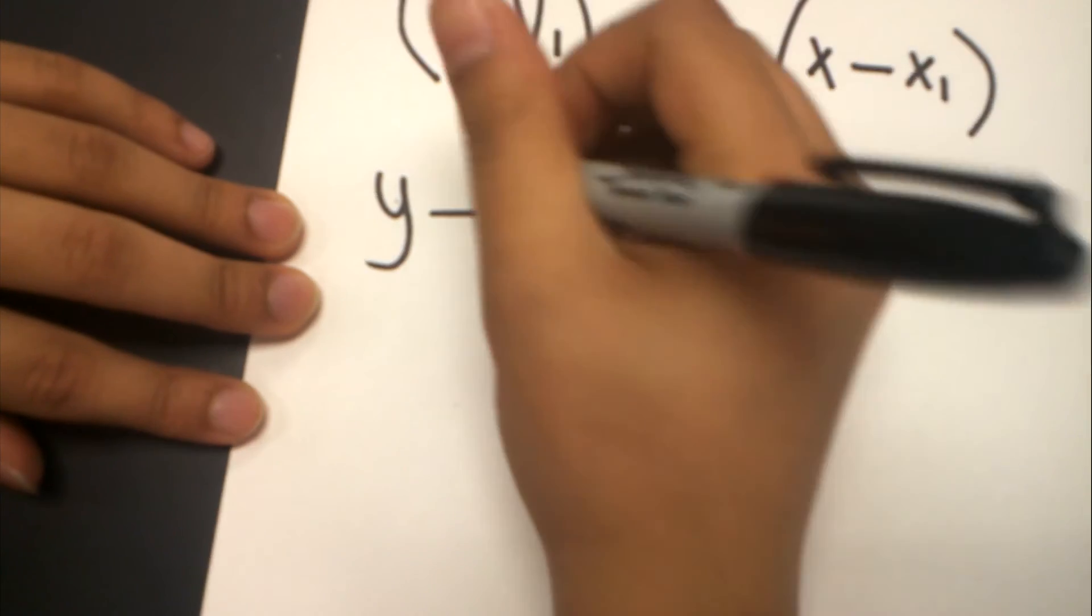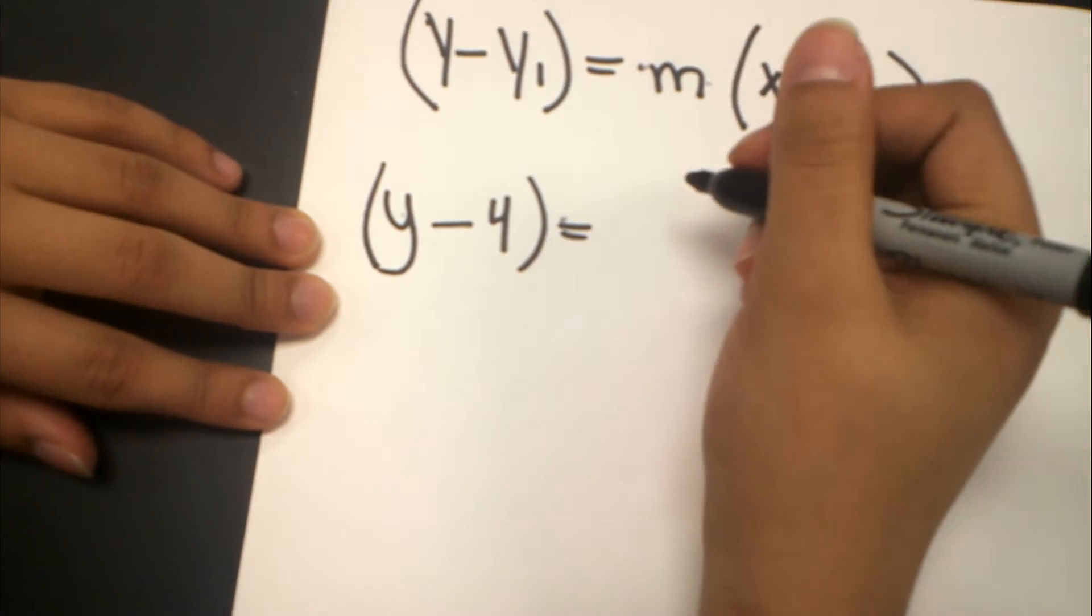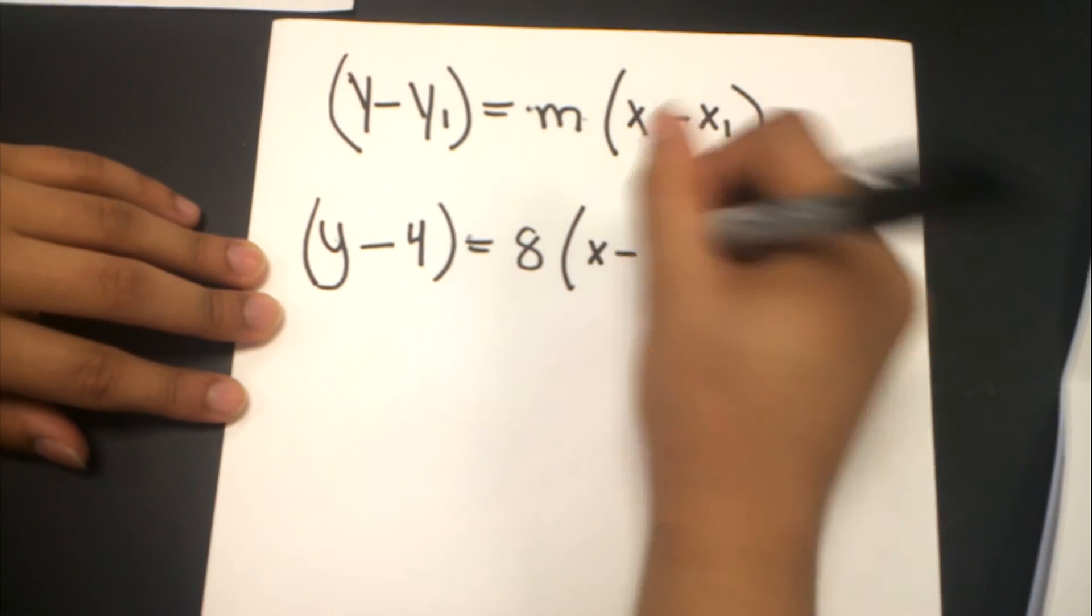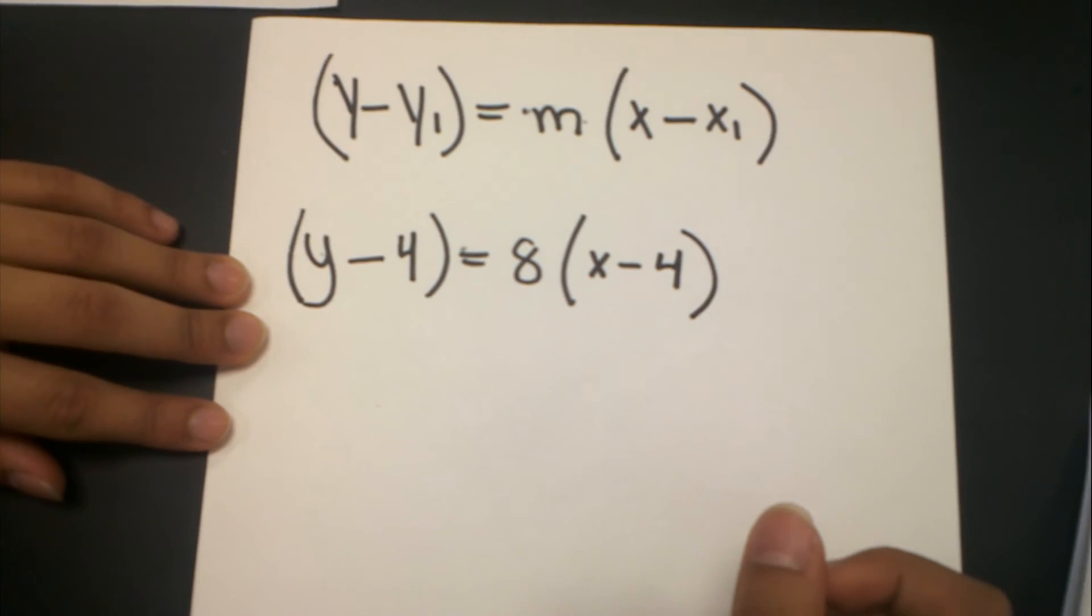So I am going to plug in for these variables right here. Y minus Y1, which is 4, equals M. M is the slope, which is 8, times X minus X1, which is 4 again. And that is what we have right now.